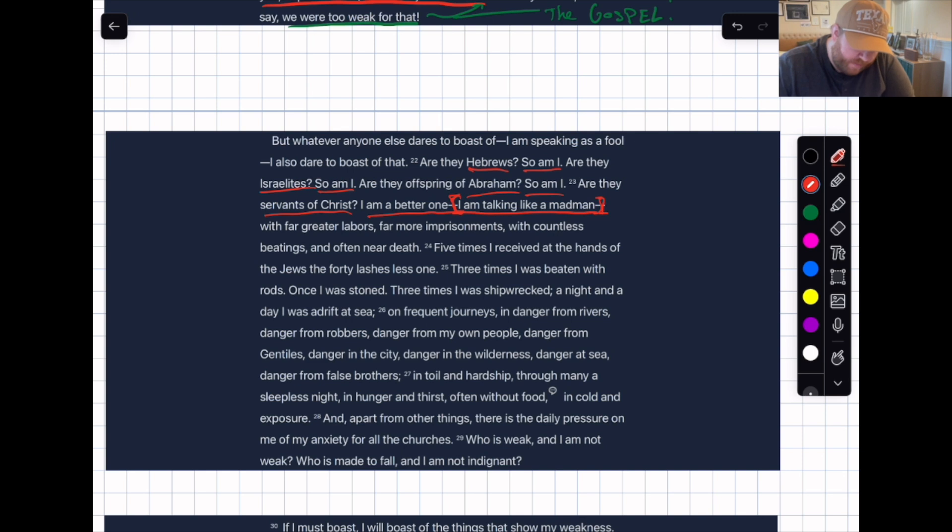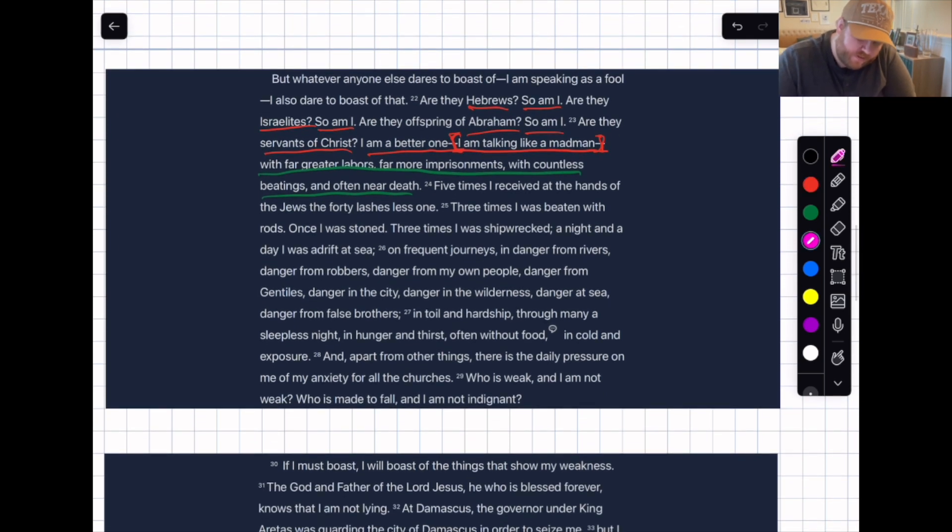With far greater labors, far more imprisonments, with countless beatings, and often near death. So he gives his qualified tier of why he's a greater servant. Look at all these things that have happened to me. Five times I received at the hands of the Jews the 40 lashes less one. I want to dive into that—look that up in my commentary. What is this 40 lashes plus one? What's the historical significance there? Three times I was beaten with rods, once I was stoned, three times I was shipwrecked, a night and a day I was adrift at sea.